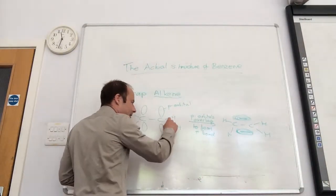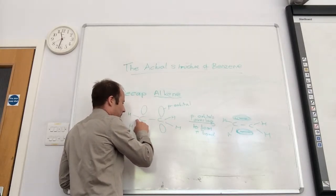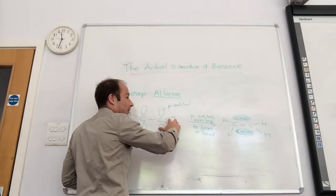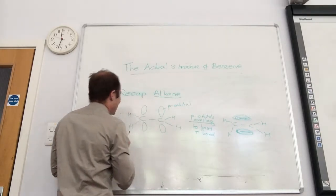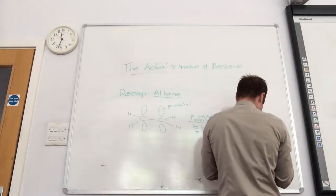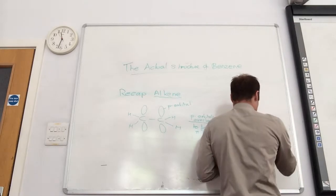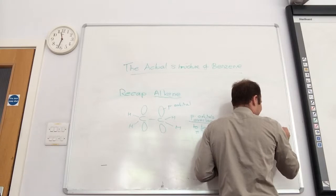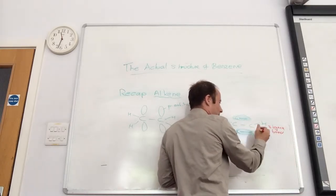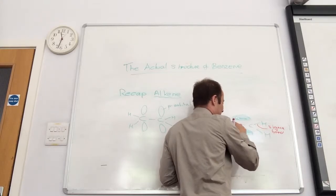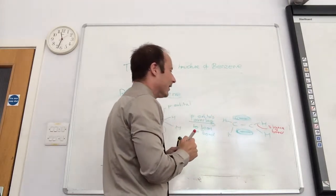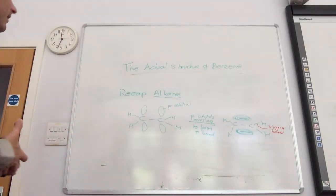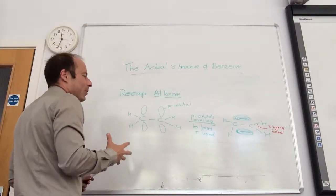What can you remember we call these little bits here? If that's a pi bond, what about the sigma? Yeah, that was a sigma framework. Those ones are sigma bonds, the lines, yeah the lines. So that's how alkenes form, so let's try and draw benzene now.